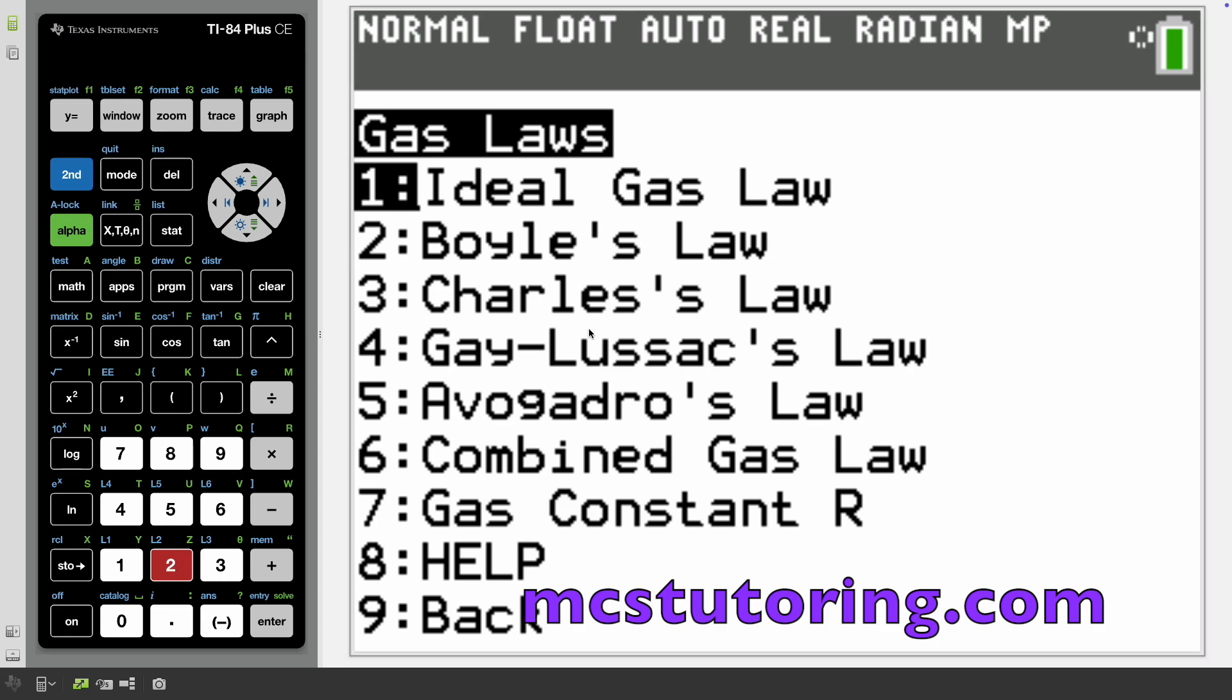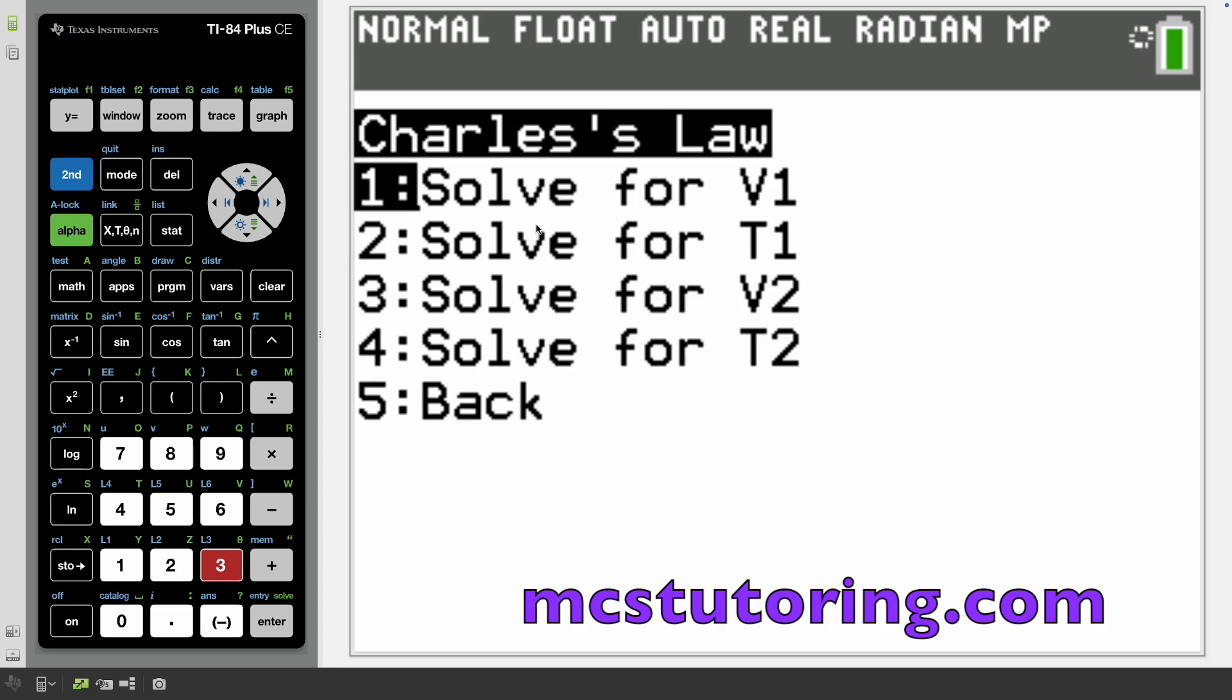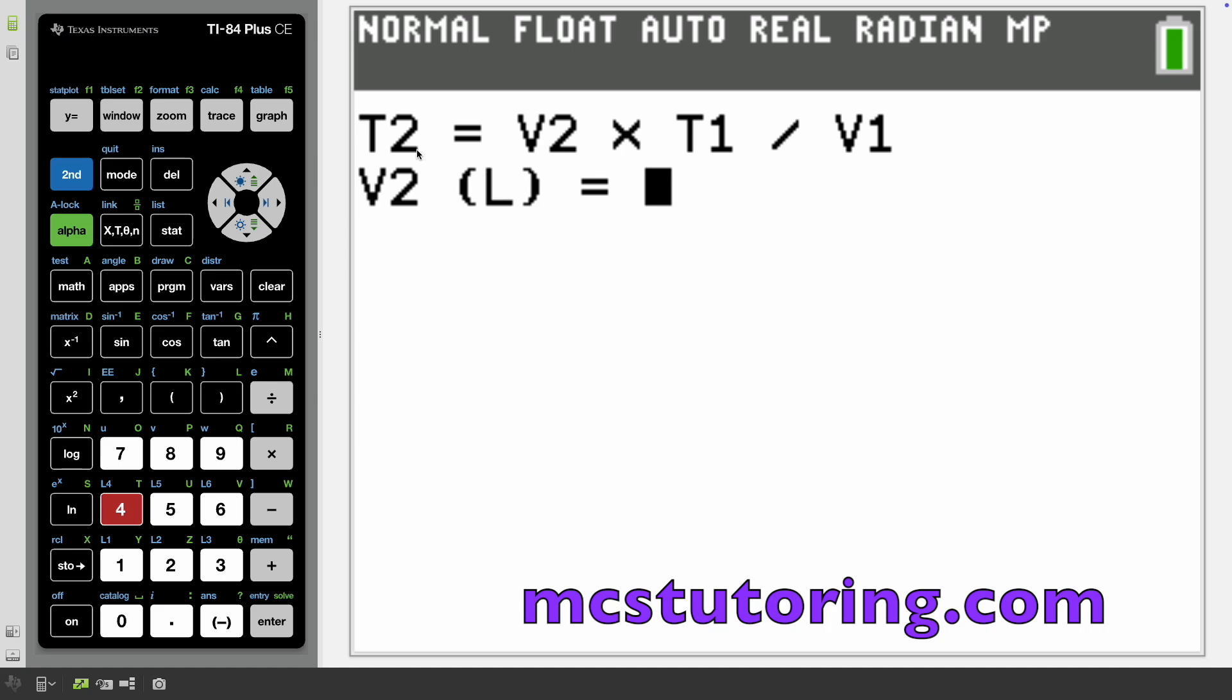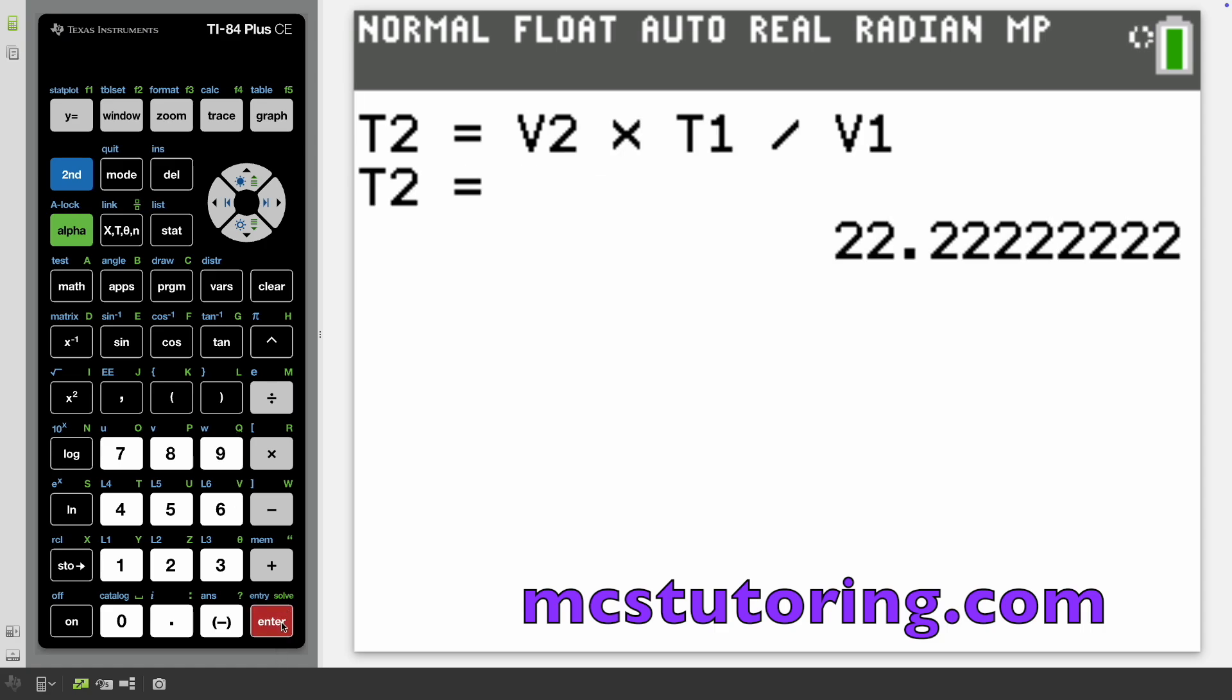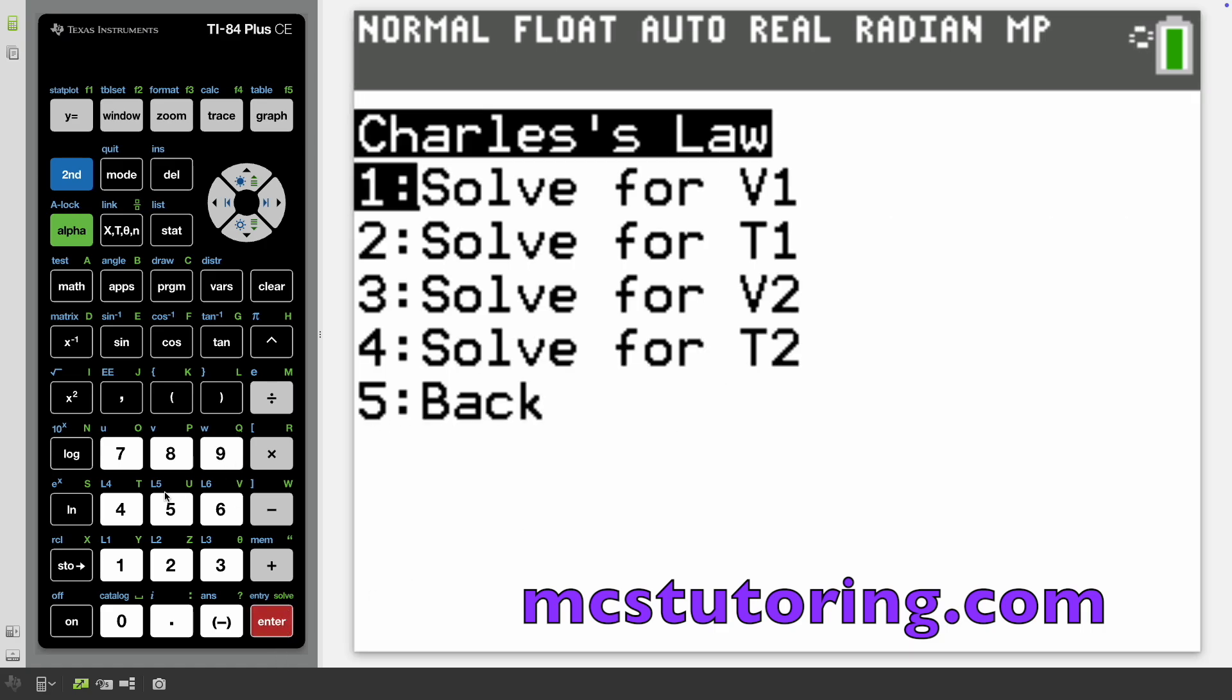Let's go back to gas laws and do Charles law. We can solve for V1, T1, V2, or T2. Let's solve for T2. T2 equals V2 times T1 divided by V1. Let's say V2 is eight liters, T1 is 25, V1 is nine. So T2 is 22.22.